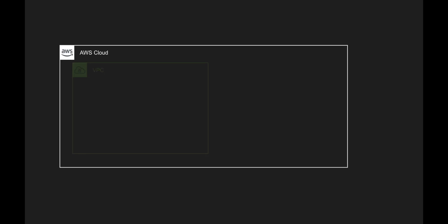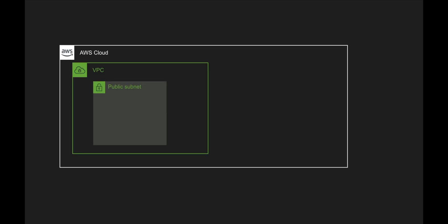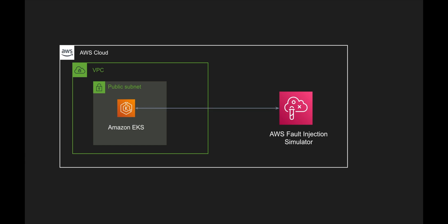As always, we are going to start with an architectural diagram and then see how we can run FIS within EKS. I'm going to create an EKS cluster — in fact, I created the cluster and kept it ready. It's an empty cluster right now, running within a public subnet with my own VPC. I'm going to use the AWS Fault Injection Simulator, which is the chaos engineering service within AWS.